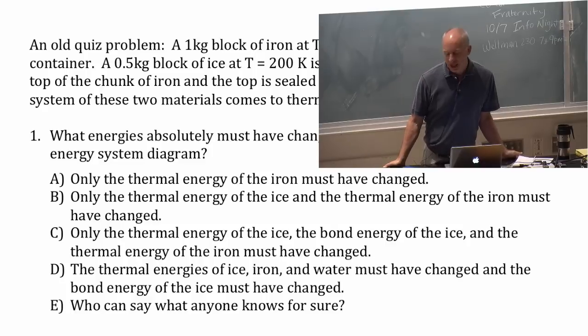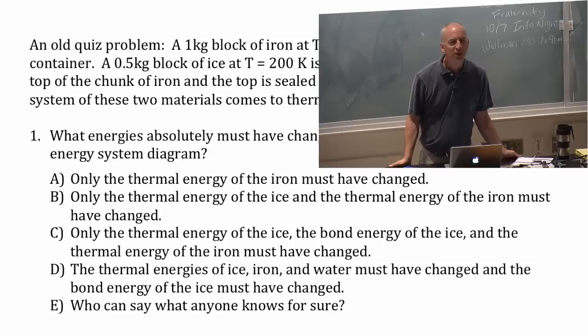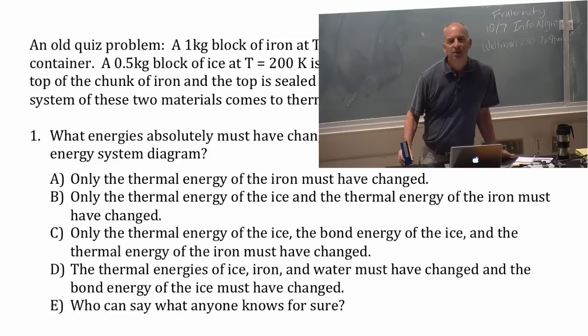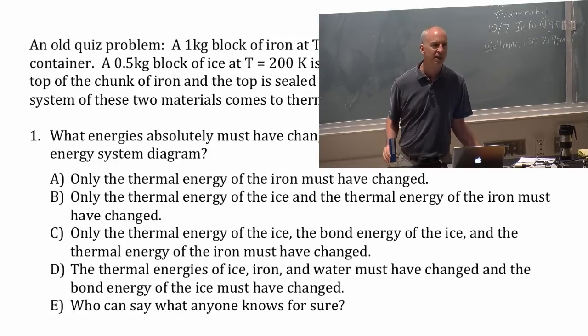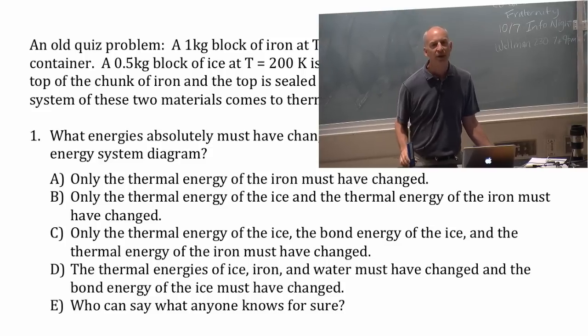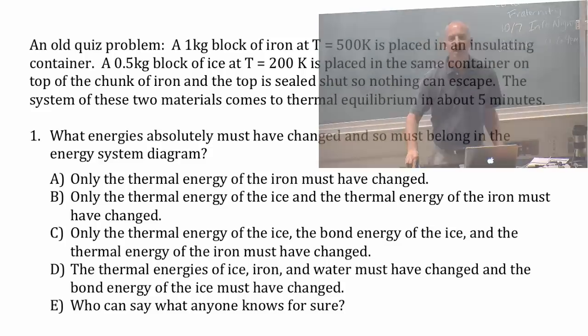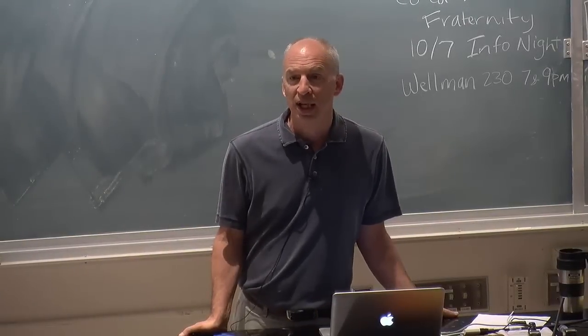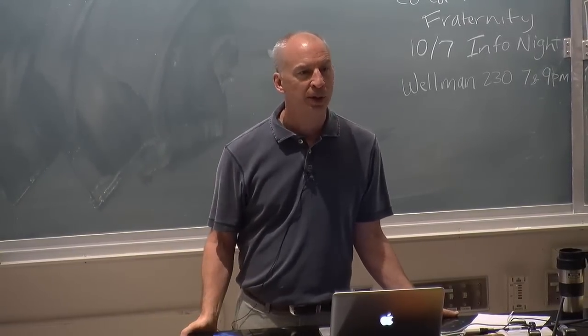I didn't check this yesterday. I really should have. I'm pretty sure I set up the amounts to contradict what I know is a lot of your intuition. So I think I set up the amounts so the final temperature would be lower than 273 Kelvin. So lower than the freezing point of ice. So the final temperature would have solid ice, no bond energy changes, none of the ice melted, and really cold iron.